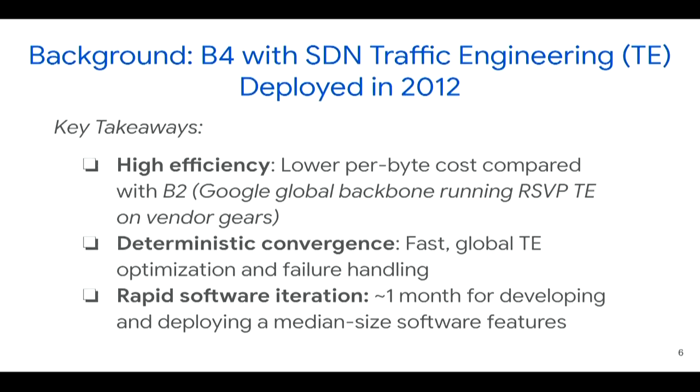This central control of B4 traffic engineering pathing has proven invaluable. It provides much higher efficiency compared with B2, which is Google's global backbone running RSVP-TE on vendor gear. Because it makes more efficient use of network resources, we can significantly reduce provisioning costs. The centralized controller also offers more predictable behavior in terms of network convergence, and this platform enables fast feature velocity.